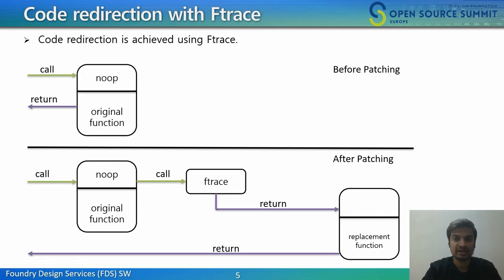So now, code redirection with Ftrace. This feature is named function tracer, or Ftrace. It is a powerful framework to measure several aspects within the kernel like events and interrupts — for example, it can measure the latency of specific functions like writing to disk. Livepatching is achieved by redirecting the call to a kernel function to its patched version, and it depends on the Ftrace tracing framework available in the Linux kernel to profile kernel functions during their invocation. Every redirection requires a callback to be registered with the Ftrace framework.